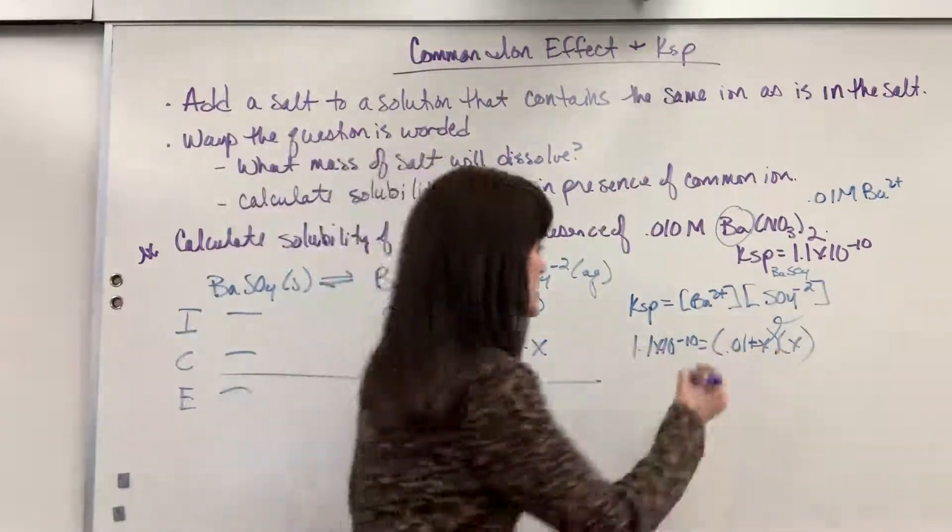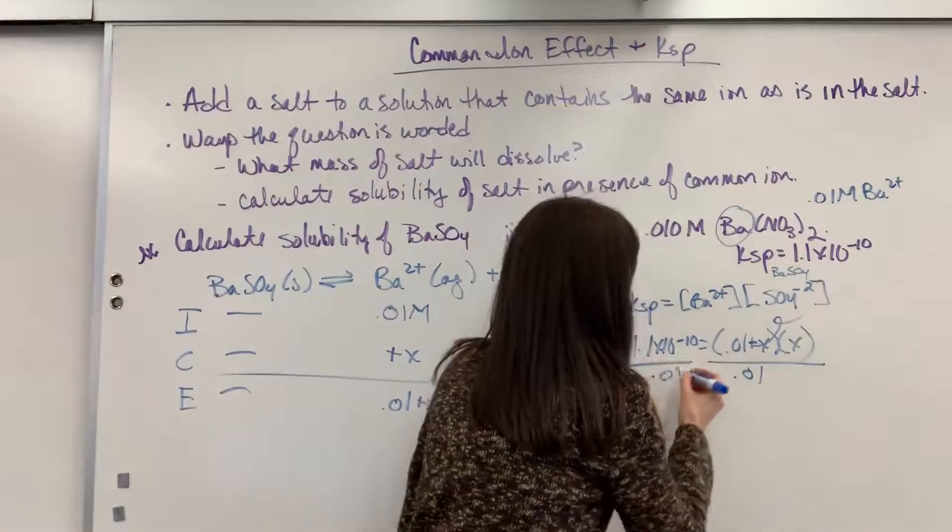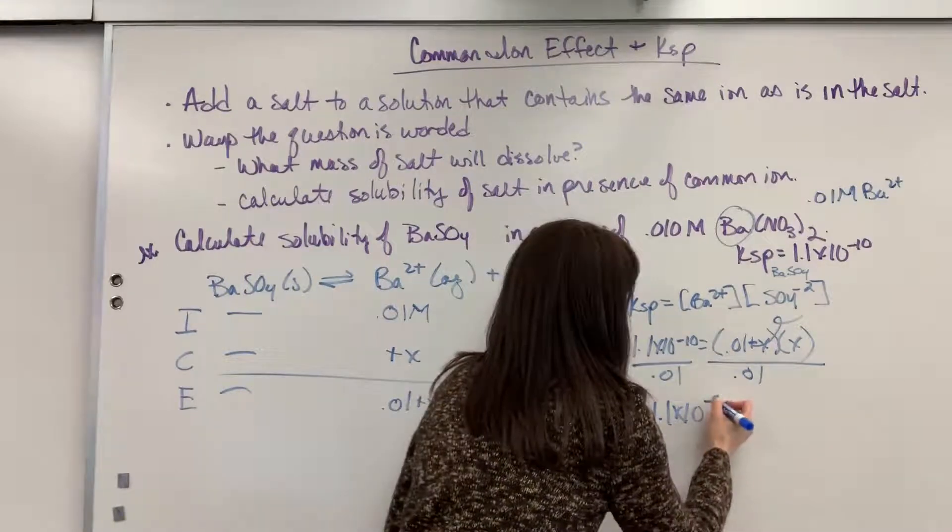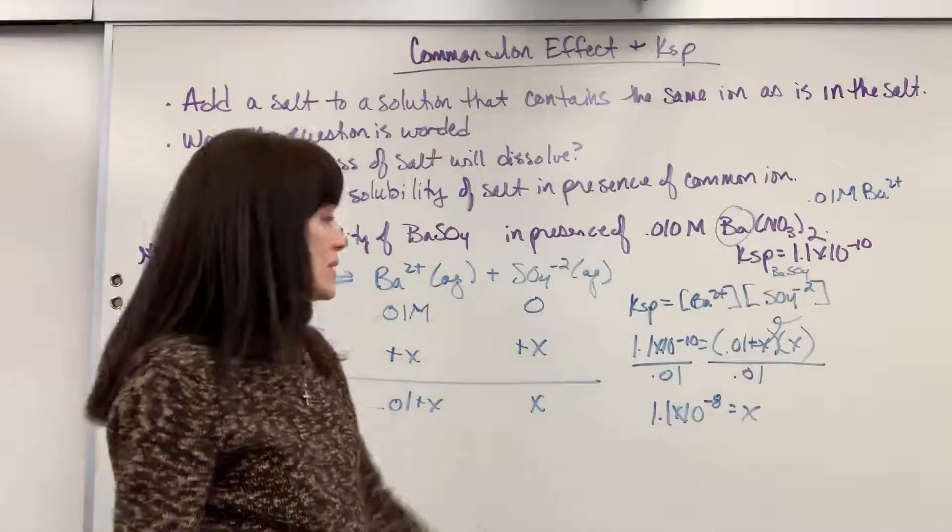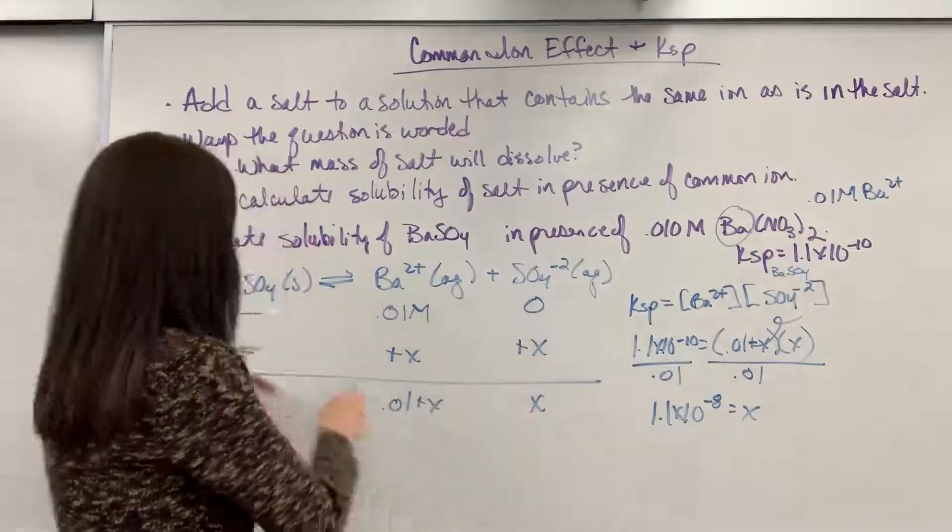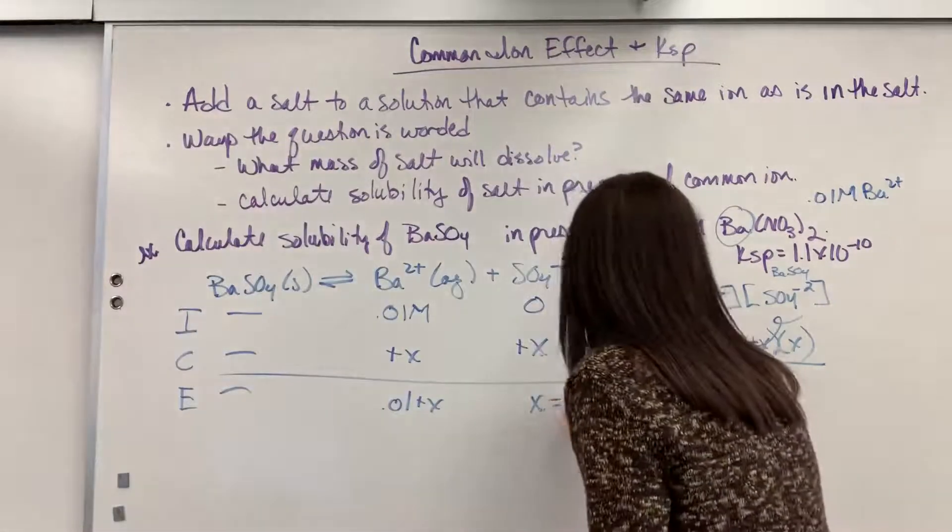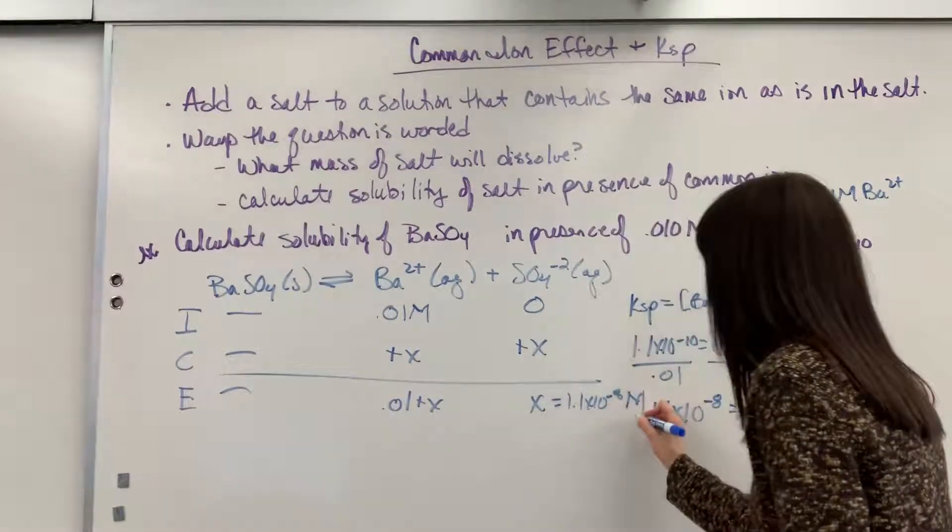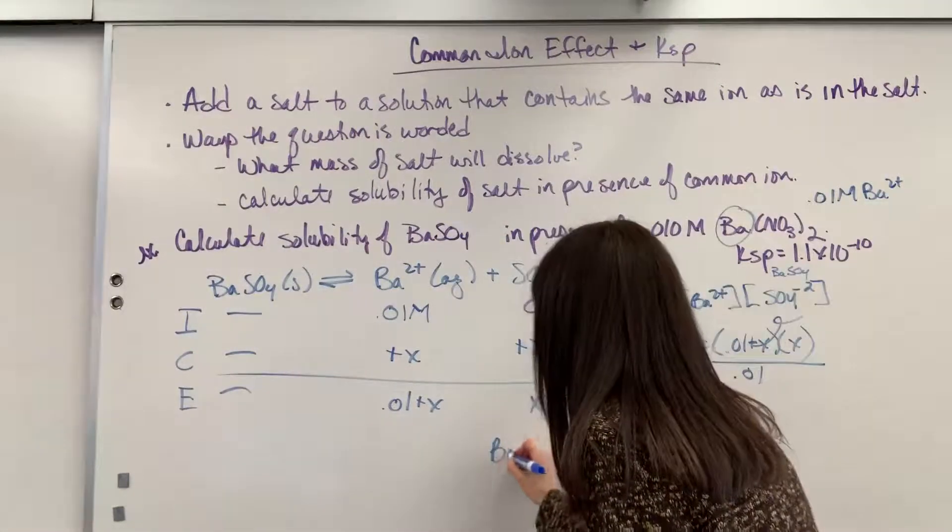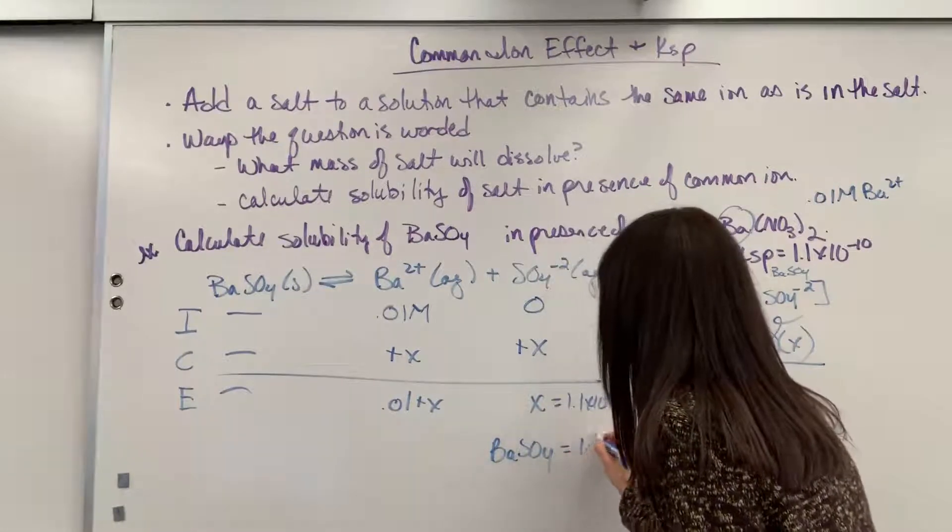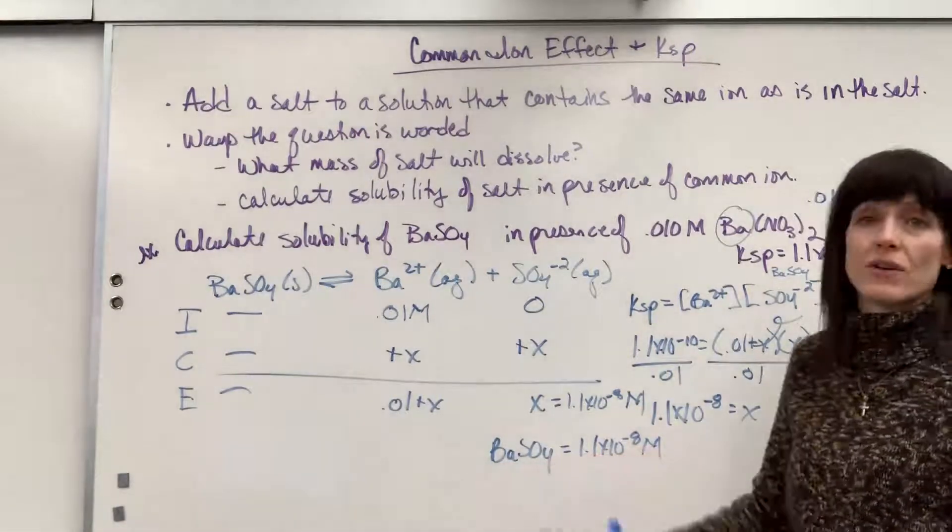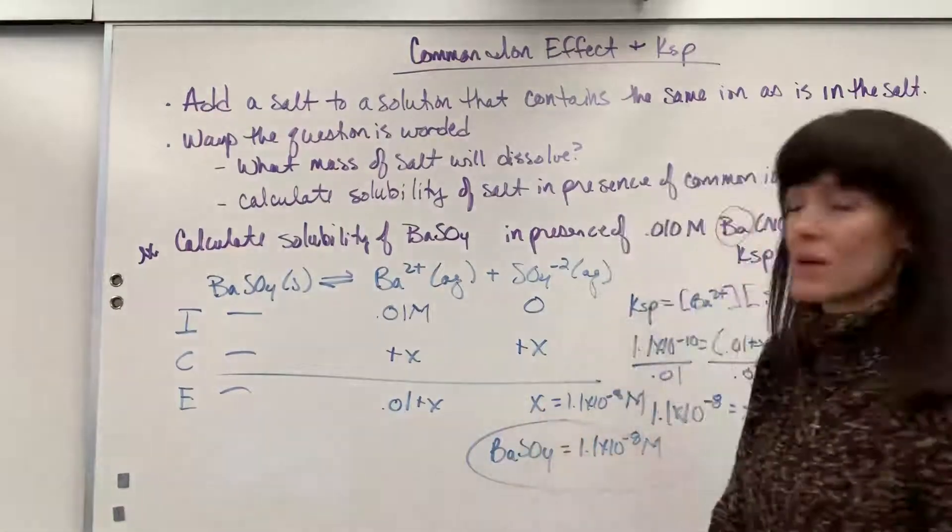So now we can do the math. To solve for X, all we have to do is divide by 0.01, and we will get 1.1 times 10 to the minus 8 equals X. So what did we find? We found X. Now remember, one mole of X came from one mole of barium sulfate. So yes, X is 1.1 times 10 to the minus 8 molar, but that is because one mole of sulfate came from one mole of barium sulfate. That also means that barium sulfate has a solubility of 1.1 times 10 to the minus 8 moles. 1.1 times 10 to the minus 8 moles will dissolve in every one liter of solution. That's the solubility of the barium sulfate.